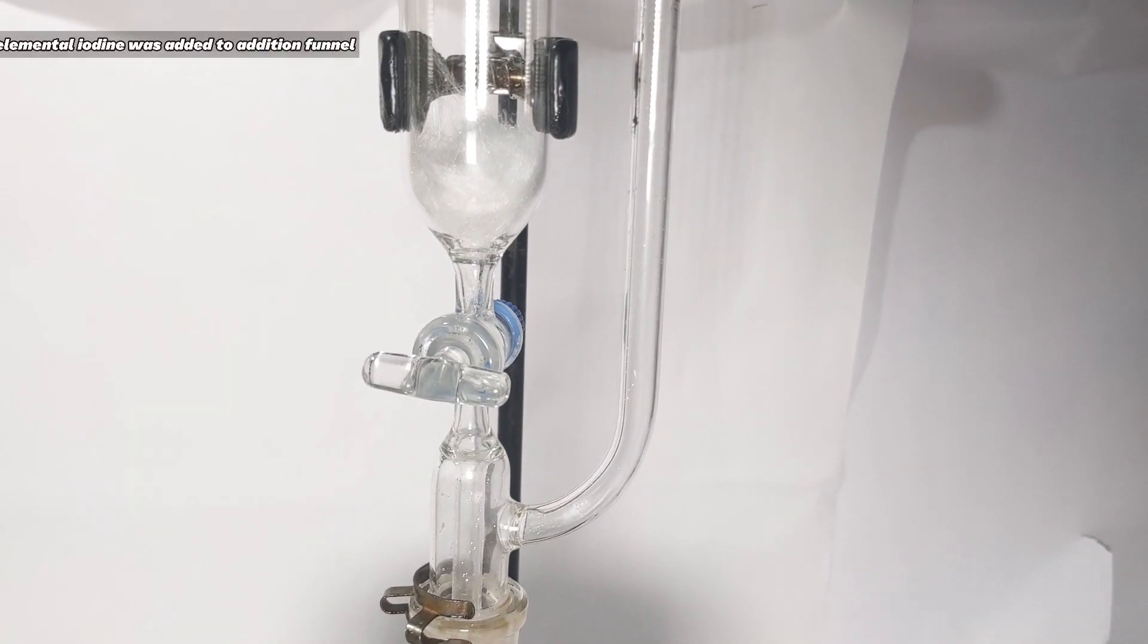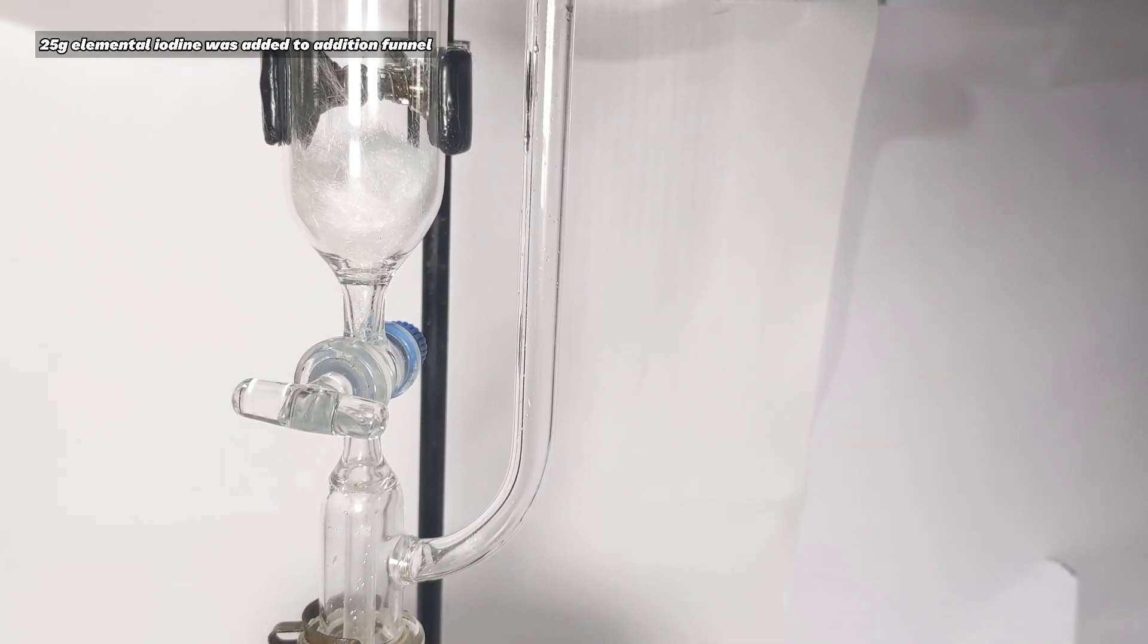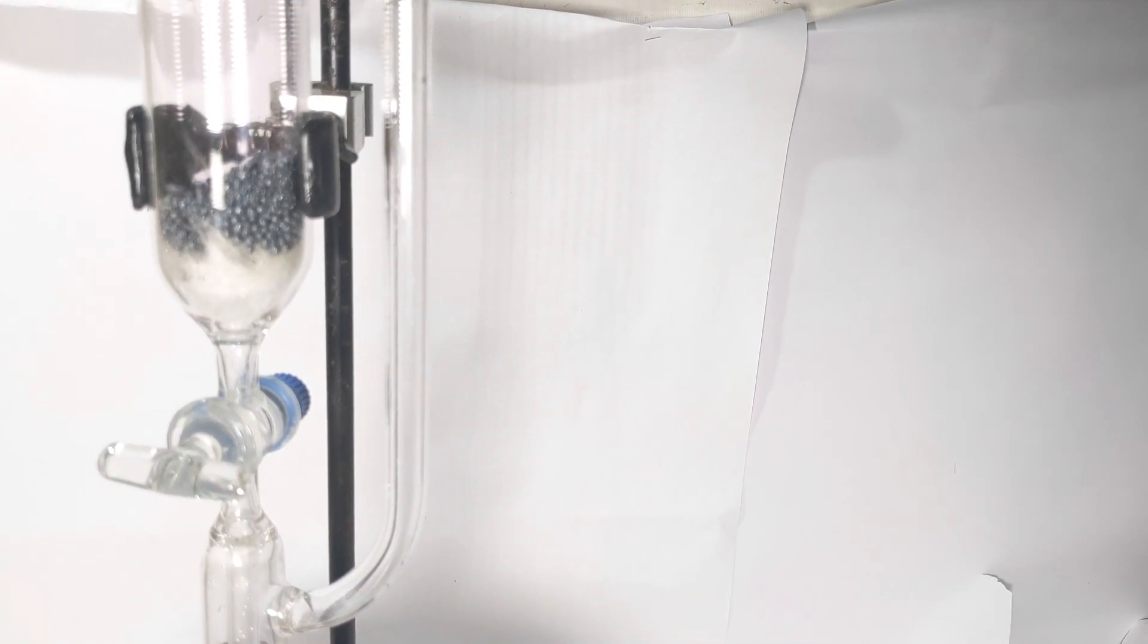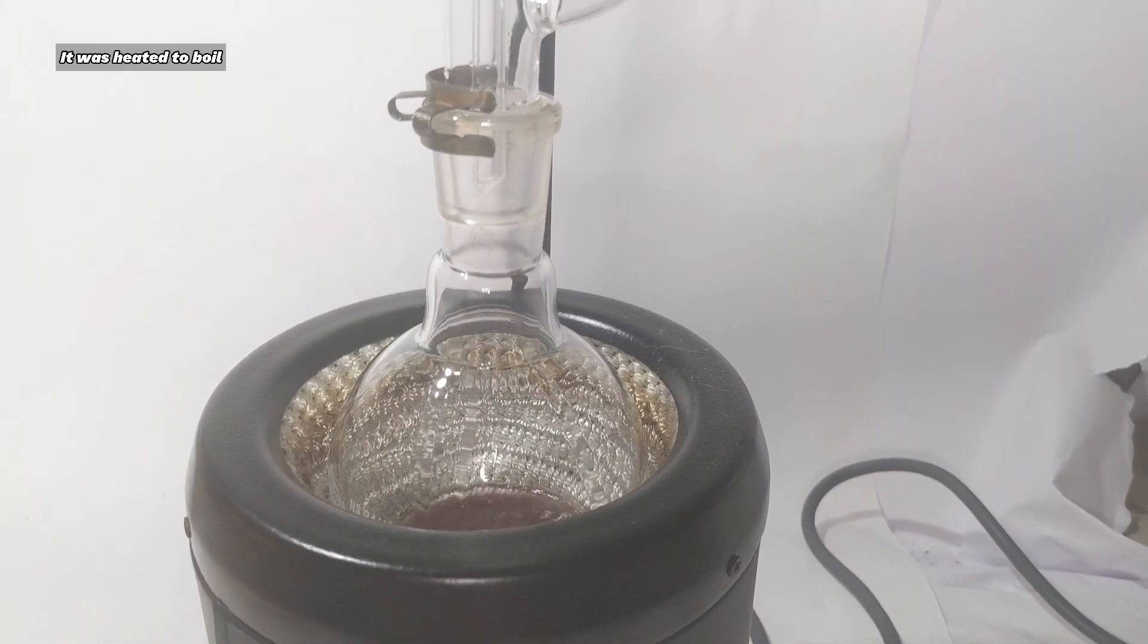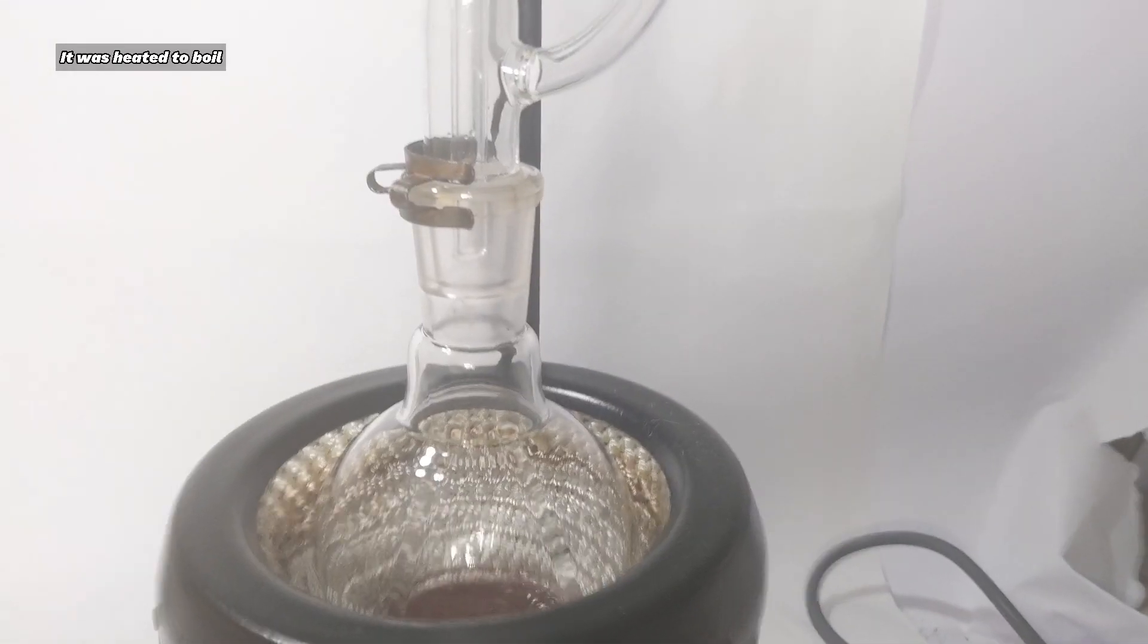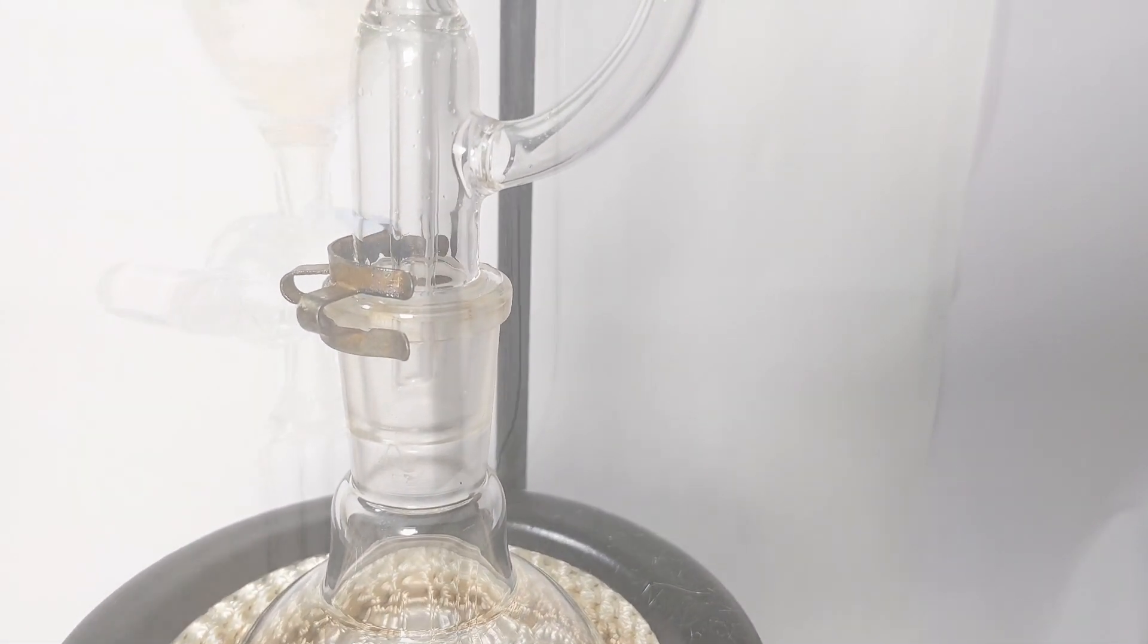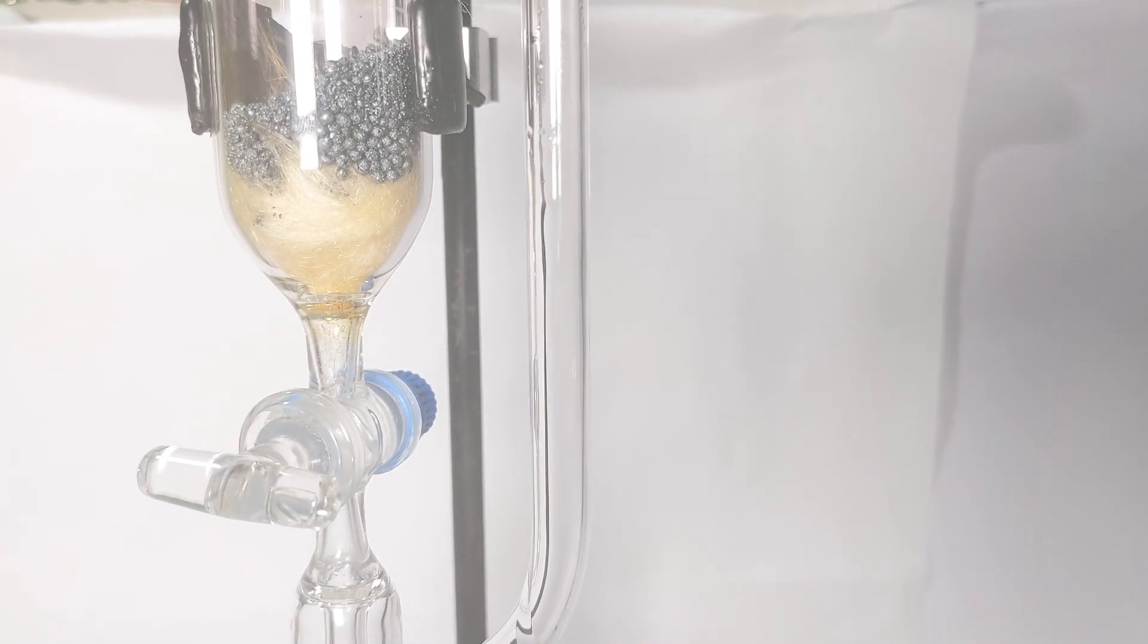The addition funnel was charged with 25 grams of elemental iodine in the form of crystals. The heating mantle was turned on and the solution was heated to boil. You can clearly see the vapor front climbing up the sides of the tube of the pressure equalizing addition funnel. It goes all the way up into the funnel.